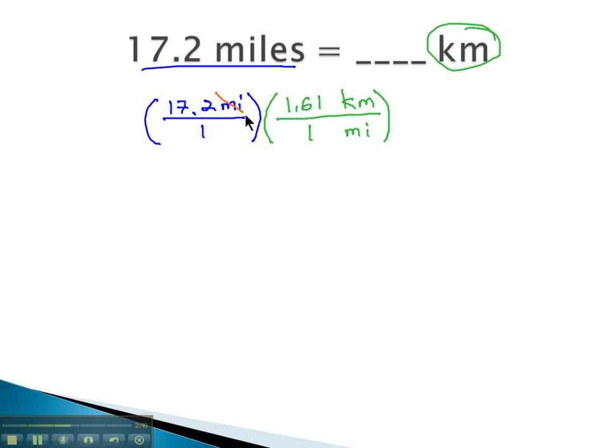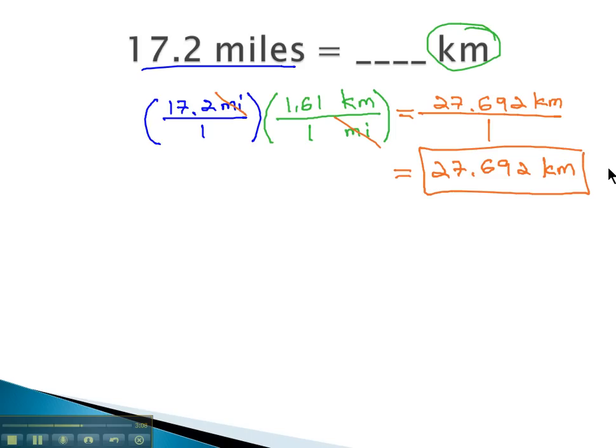Now, with miles in the numerator and denominator, they're dividing out, and we can multiply straight across. 17.2 times 1.61 kilometers is 27.692 kilometers over 1. Well, this is a simple division problem. Dividing by 1 leaves 27.692 kilometers is equivalent to the 17.2 miles.